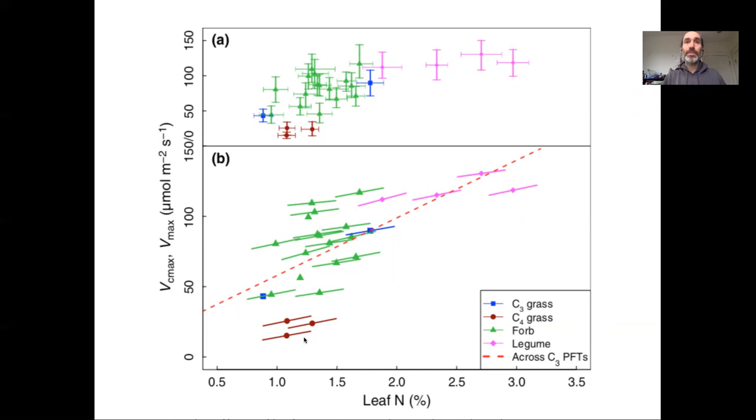And that was actually an important finding because prior to this, a lot of folks that were modeling how leaf parameters responded to leaf nitrogen were using an across species relationship to describe within species variability, and we can see like if we're looking at this forb group, the cross species slope would be very different than the within species slope, and even this overall across species across C3 was different than what we see within the individual species.